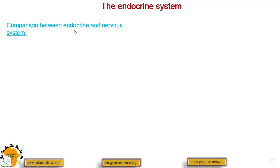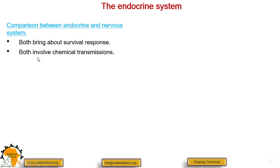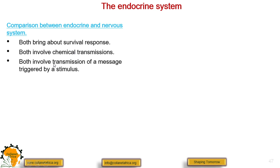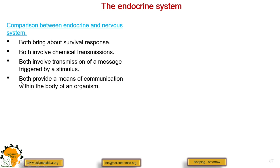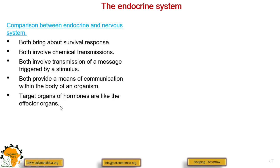We want to compare the endocrine — the hormonal system — and the nervous system. Both bring about survival responses required for survival, and both involve chemical transmissions. Both involve transmission of messages triggered by a stimulus, which we call an impulse, and both provide a means of communication within the body. The target organs of hormones act like effector organs.